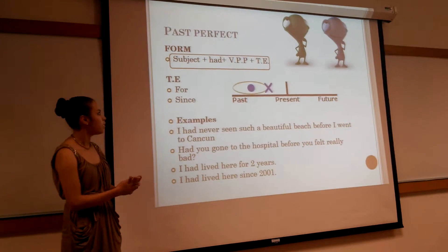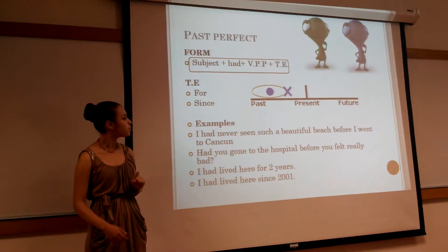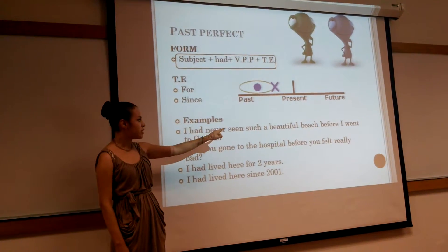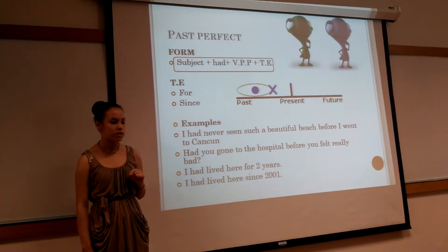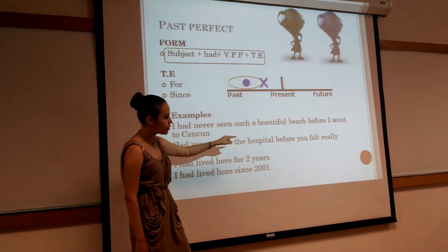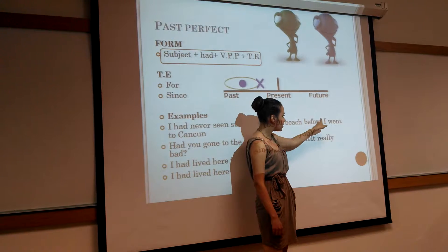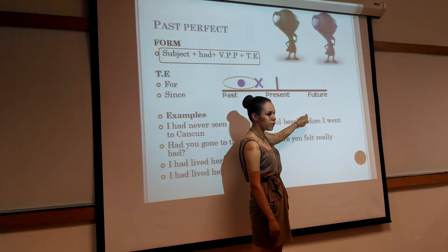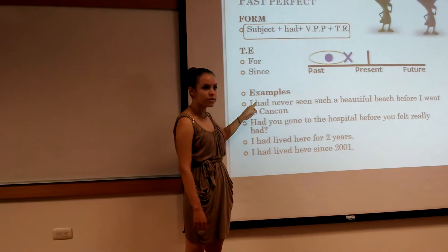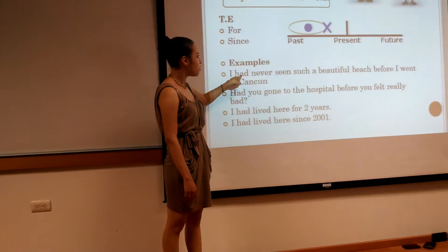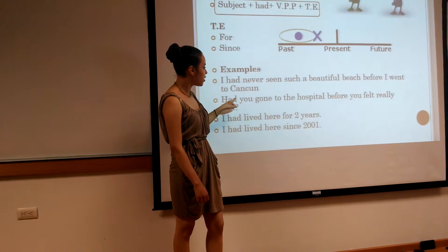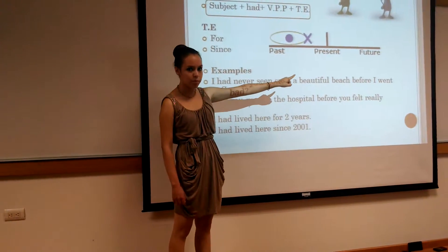The time expression can be like 'for' or 'since'. An example is: I had never seen such a beautiful beach before I went to Cancun. Here is the first area and here is the second area, connected with 'before'. The first area highlights the subject, the auxiliary, and the past participle, and the second area uses the simple past.